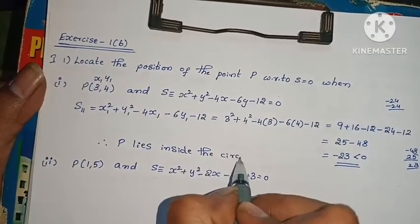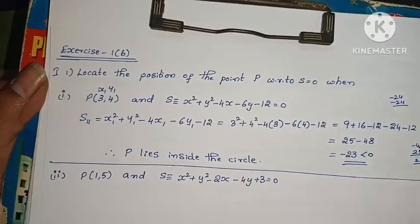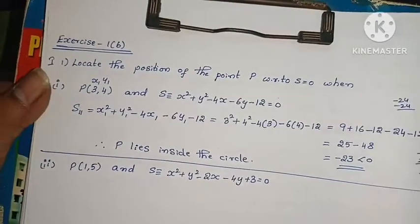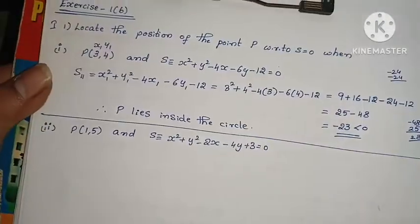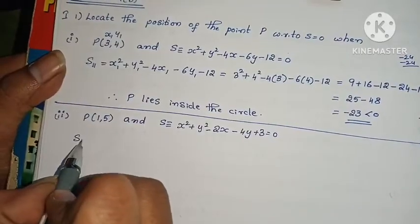That gives us 25 minus 48, which is minus 23. Since S11 is less than 0, therefore P lies inside the circle.